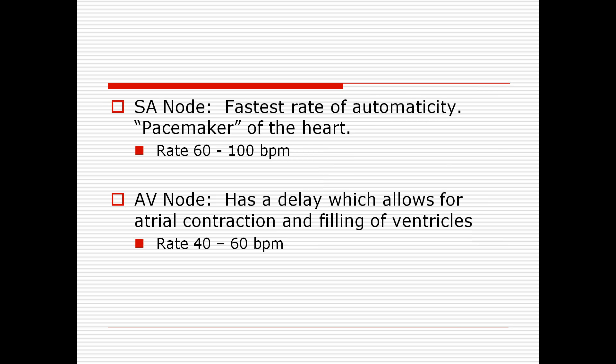The SA node is basically the pacemaker of the heart. All heartbeats should originate in the SA node. The normal heart rate of the SA node is 60 to 100 beats per minute. Anything above that is tachycardia; below 60 is bradycardia. You could be in sinus bradycardia or sinus tachycardia and still have a sinus rhythm, meaning the impulse still begins in the SA node. Normal sinus rhythm is 60 to 100.